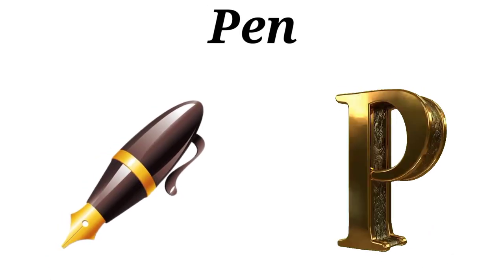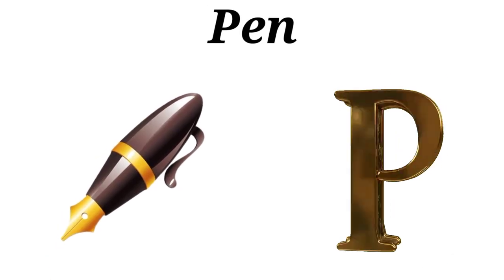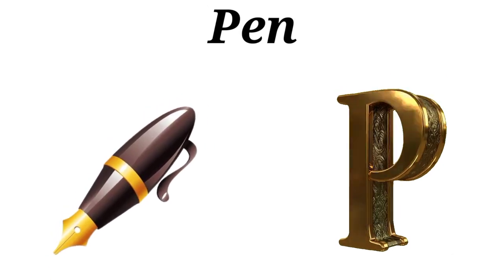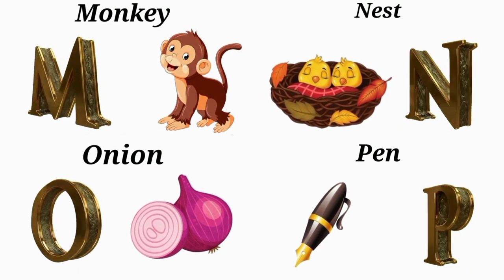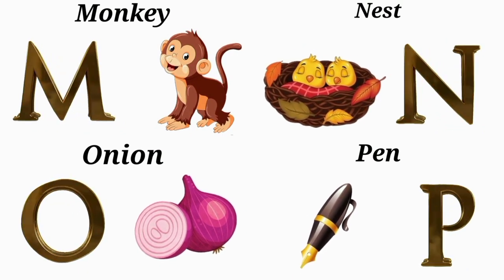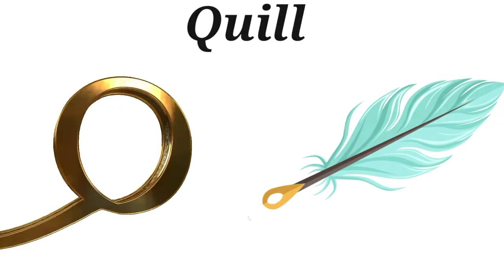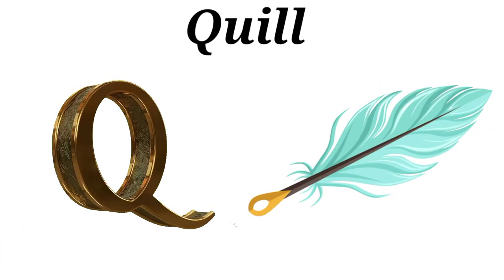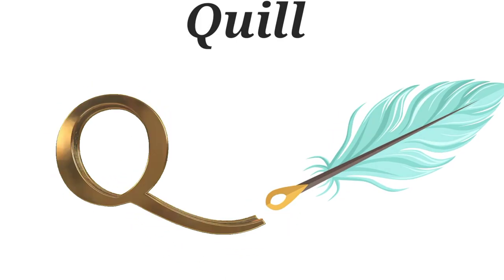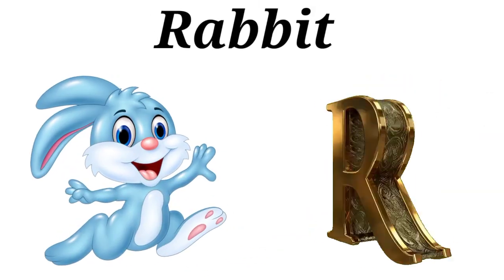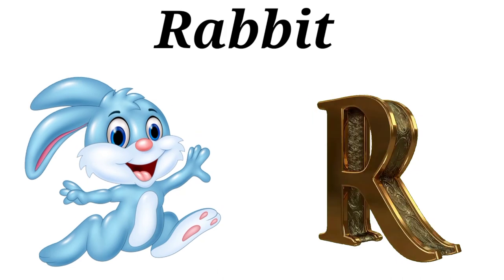P is for Pen. P, P, Pen. Q is for Quill. Q, Q, Quill. R is for Rabbit. R, R, Rabbit.